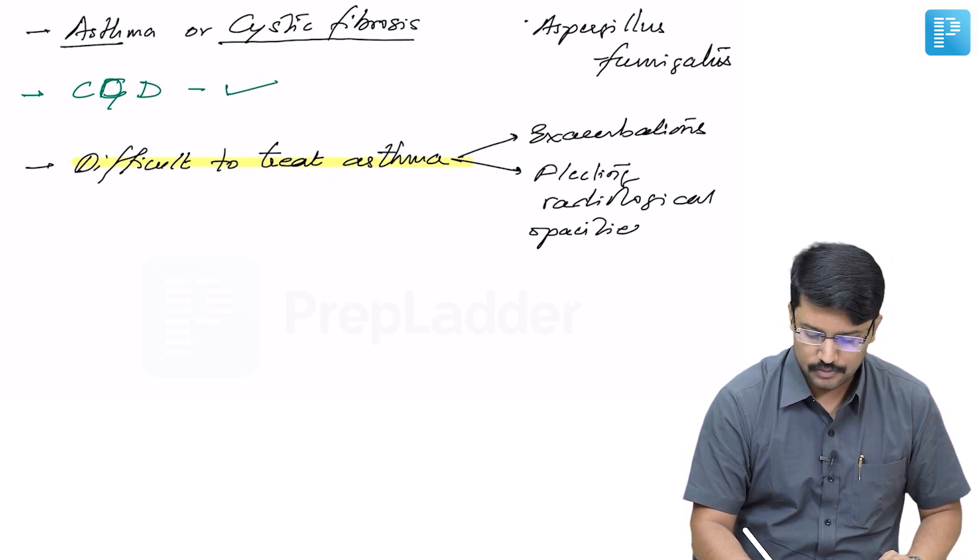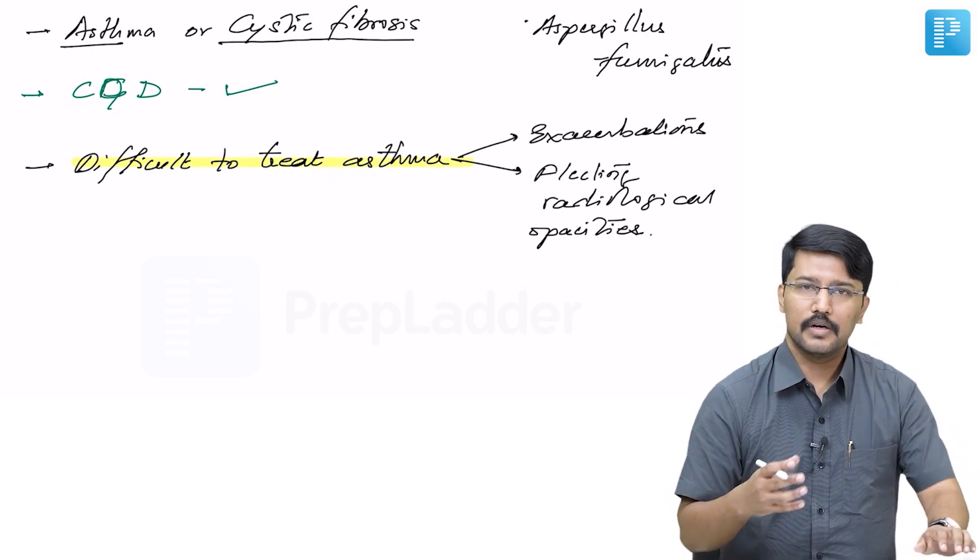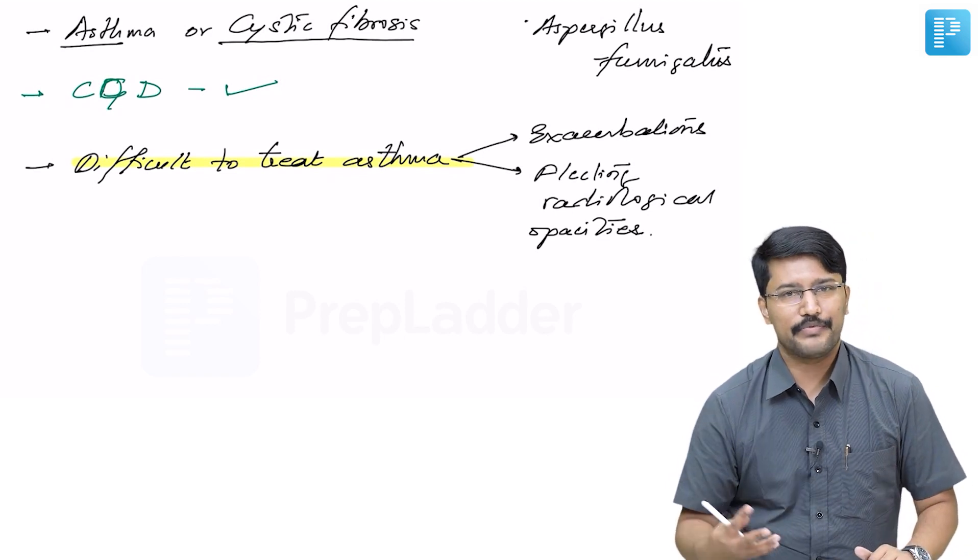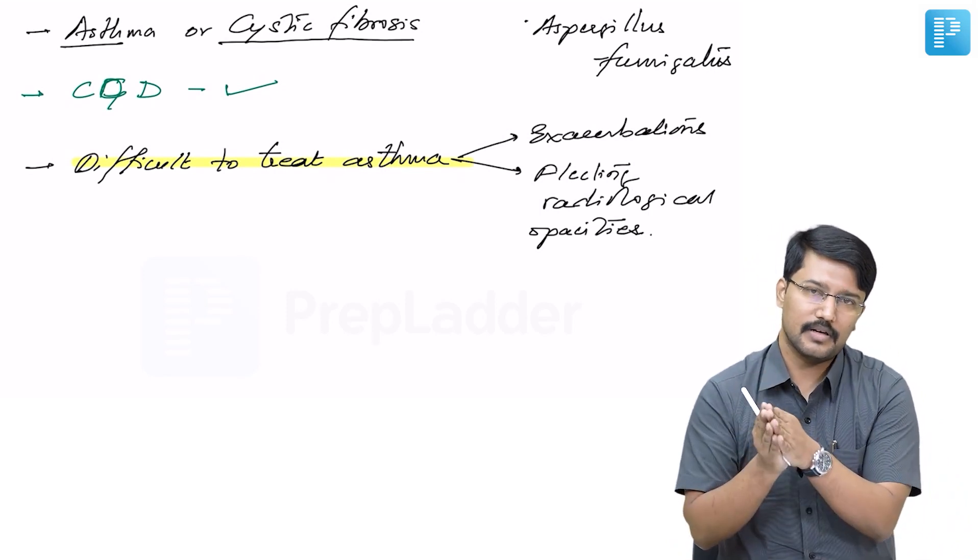What do I mean by fleeting radiological opacities? The patient may have infiltrates at a particular location on chest x-ray, but during follow-up visits, those infiltrates may disappear and appear in another anatomical region.